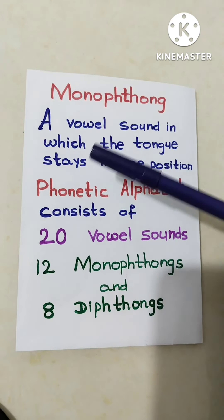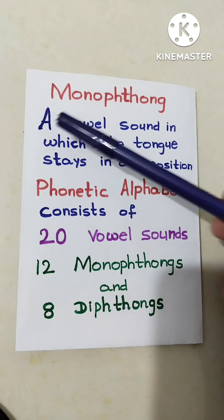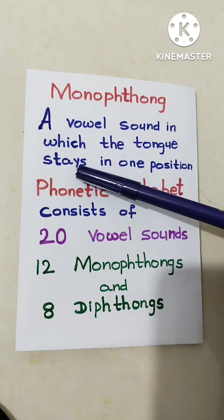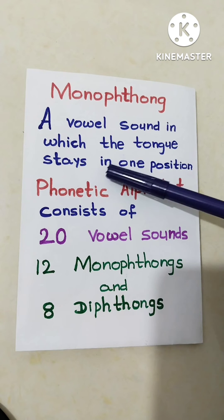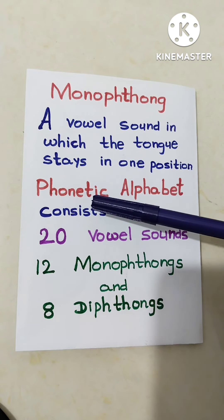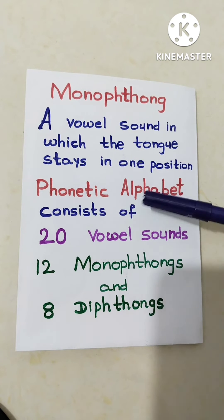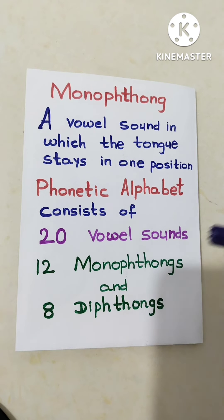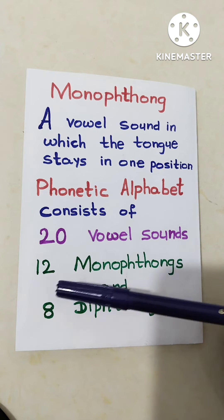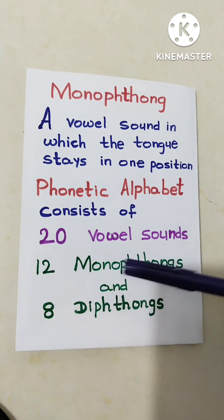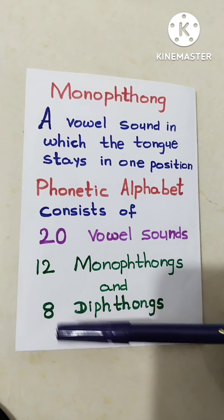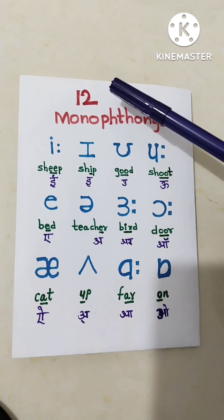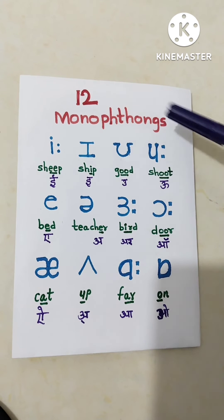What is the monophthong? A vowel sound in which the tongue stays in one position. The phonetic alphabet consists of 20 vowel sounds, of which 12 are monophthongs and 8 are diphthongs. These are the 12 monophthongs.